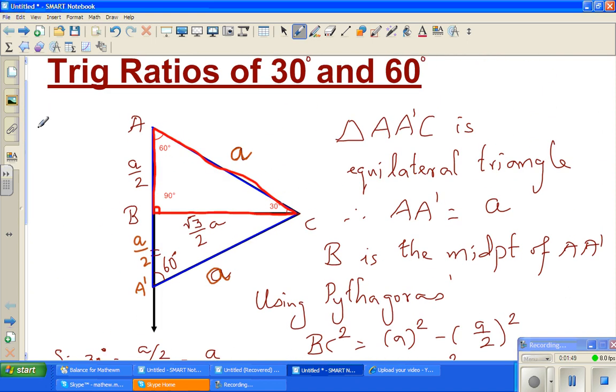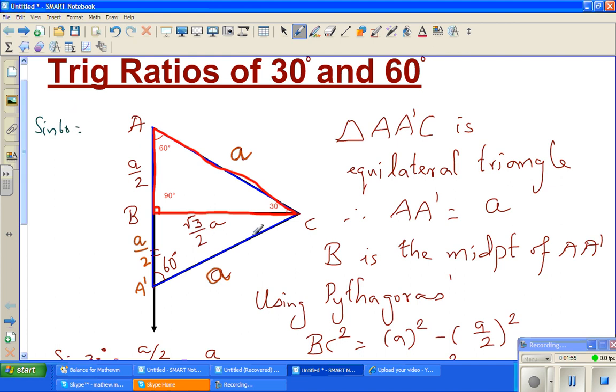I want to keep it here, sin 60. For 60, this is the opposite and this is the hypotenuse. So this is root 3 over 2A over A. So A and A will get cancelled. So sin 60 is root 3 over 2, and this will be on a calculator 0.866. So your calculator will tell you sin 60 is 0.866 goes on. I will show you on a calculator.